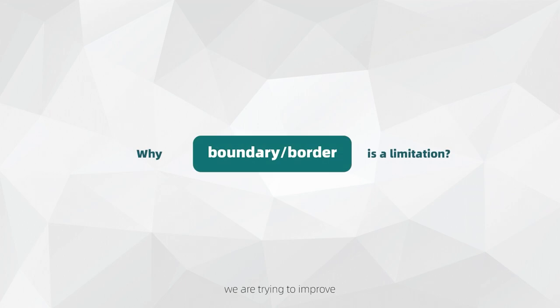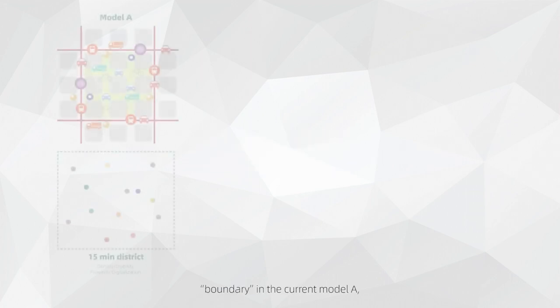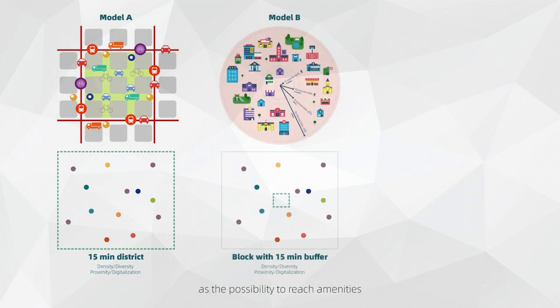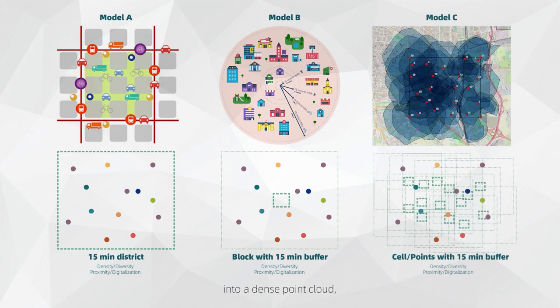Based on the IMM theory, we are trying to improve the analytic method of the 15-minute model by figuring out the limitation of boundary in the current model A, which explores accessibility to key services within a given boundary, and model B, which describes proximity and diversity as a possibility to reach amenities for a block in a given buffer zone. Being different from them, we are trying to divide the research zones into a dense-point cloud. Each point has its own 15-minute buffer zone. This could be obtained through isochrone analysis. Then we are able to measure the proximity and diversity precisely for each point. The results will be heat maps showing the variation of above-mentioned urban properties. This method is aiming to deal with the challenge of balancing localism and regionalism by not restricting the research object as a district or a block, but viewing every point as an independent element that has its own proximity and diversity.